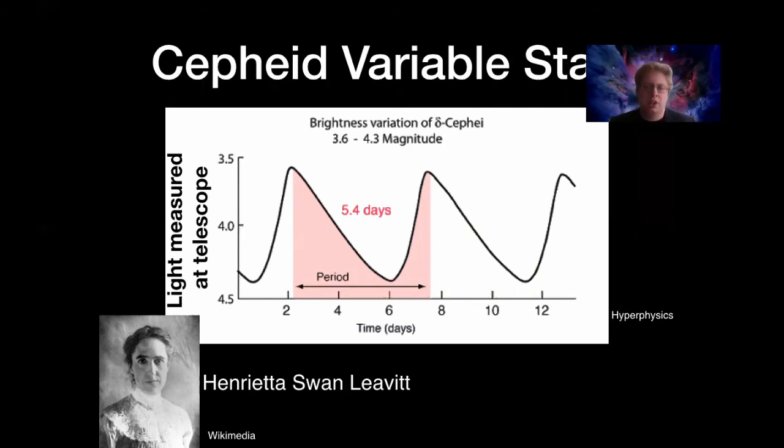So on the y-axis I'm showing the light you would measure at the telescope and on the x-axis I'm showing the time. So over time, what you can see is that the star rapidly brightens up to a peak and then it slowly decays before it starts rising again. And it repeats this pattern every period of time, in this case 5.4 days.